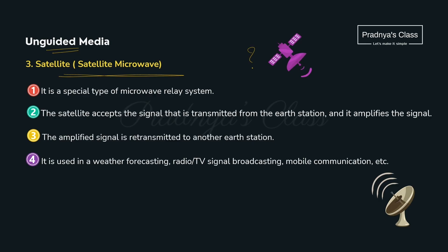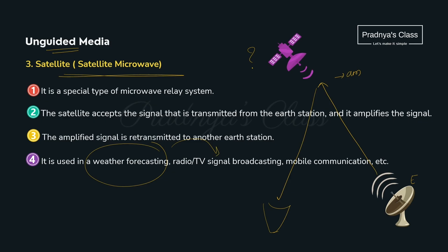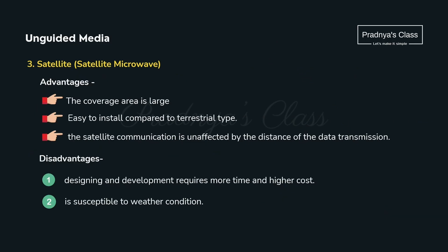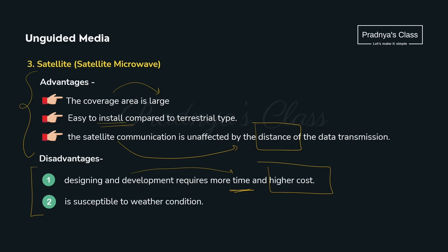The third unguided medium is satellite microwave. A satellite accepts signals from the earth station, amplifies them, and transmits to another earth station. It is used for weather forecasting, radio and TV signal broadcasting, and mobile communication. Advantages: it covers a large area, is easy to install, and is unaffected by distance. Disadvantages: designing and deployment require more time and higher cost, and it is susceptible to weather conditions.